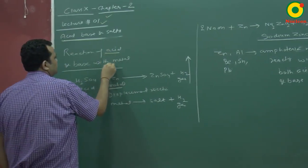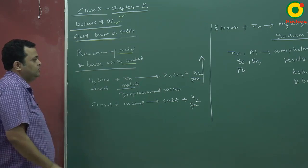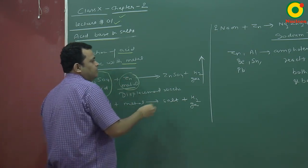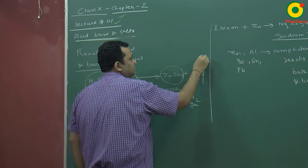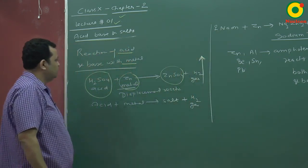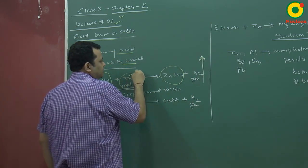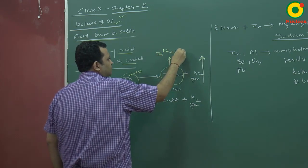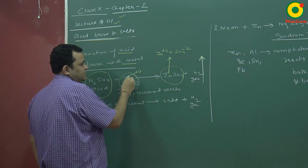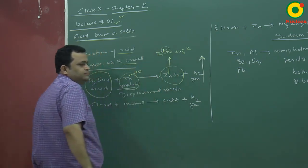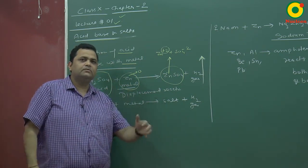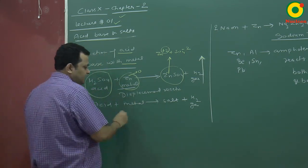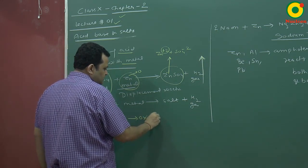Next we look at the reaction of acid with metal. A popular example: H2SO4 (sulfuric acid) reacts with zinc metal to produce ZnSO4 and hydrogen gas is liberated. In this reaction, the oxidation of zinc takes place — ZnSO4 gives Zn²+ and SO4²−. Zinc goes from oxidation state zero to +2, meaning it loses electrons, so zinc is oxidized.